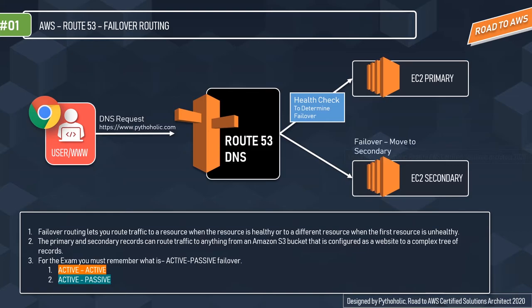For failover routing policies, there are two configurations to remember for the exam: active-active and active-passive. Active-active is used when you want all of your resources to be available the majority of the time. When a resource becomes unavailable, Route 53 detects that it's unhealthy and stops including it when responding to queries.